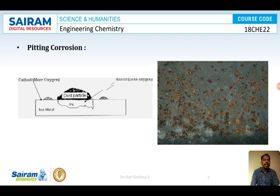Once a pit is formed, the rate of corrosion becomes very high. You can see in the diagram many holes formed on a surface — this is an example of pitting corrosion.